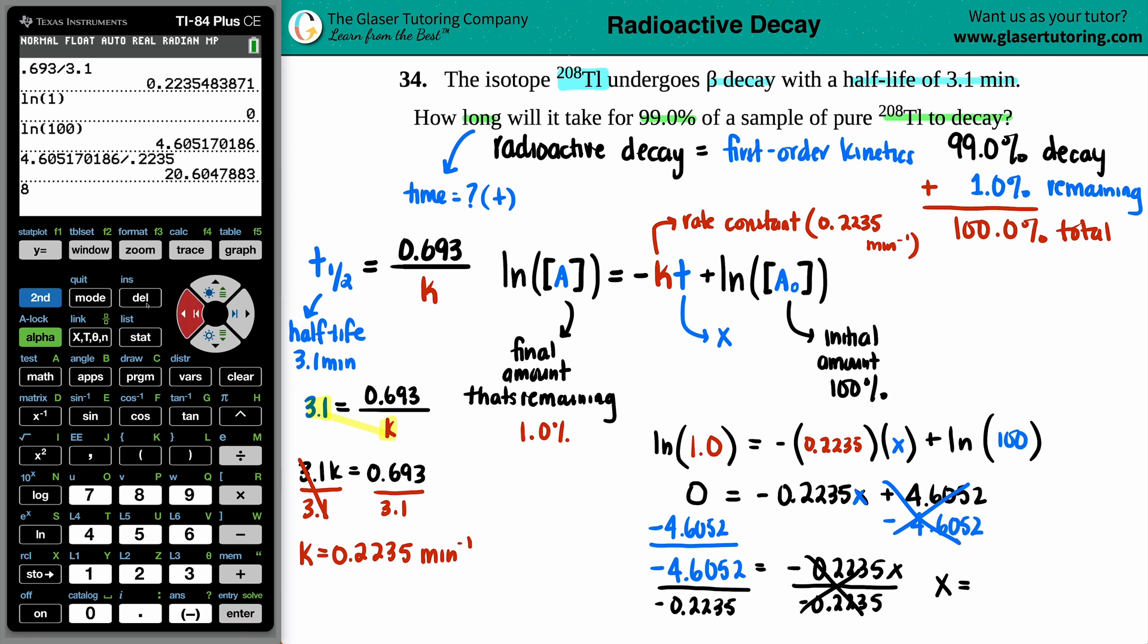And there we go. 20.6. And now just look for the unit. The unit was in minutes for the half-life. So this is going to be minutes. So it's going to take roughly about 20.6 minutes to basically decay 99% of the time. And that kind of makes sense. Your half-life is only 3 minutes. So every 3.1 minutes your sample is breaking in half, and then 3.1 minutes again it breaks in another half and another half and another half. And then 20 minutes has gone by and you're 99% decayed. You only got 1% left. And that's the answer here.